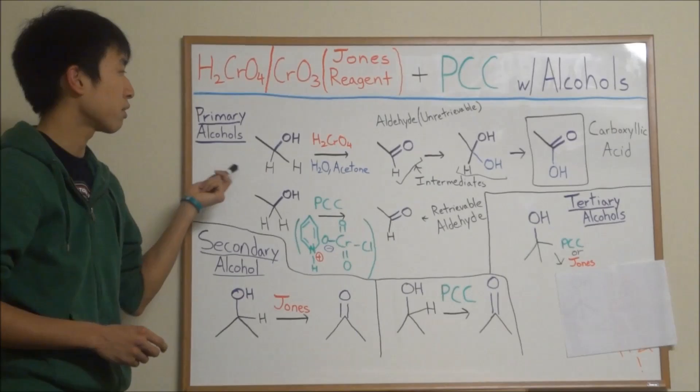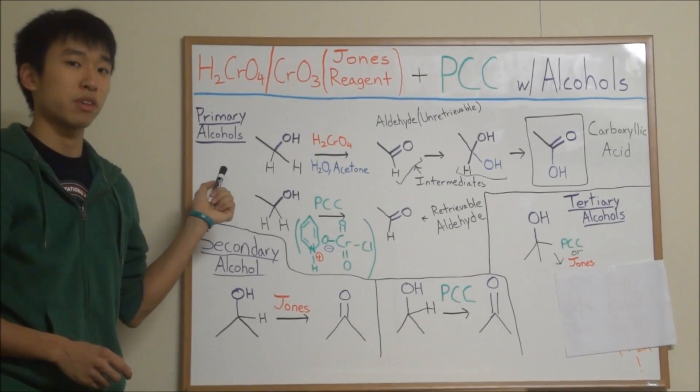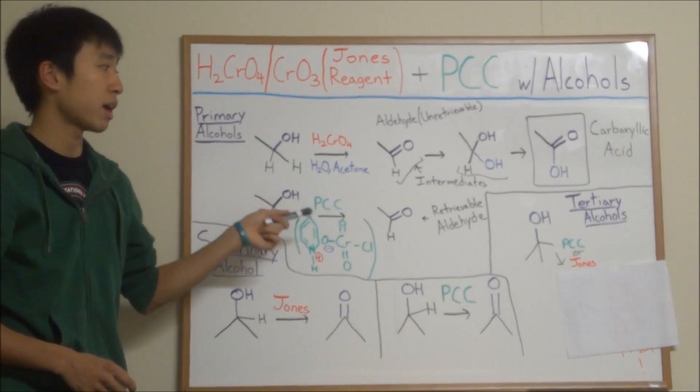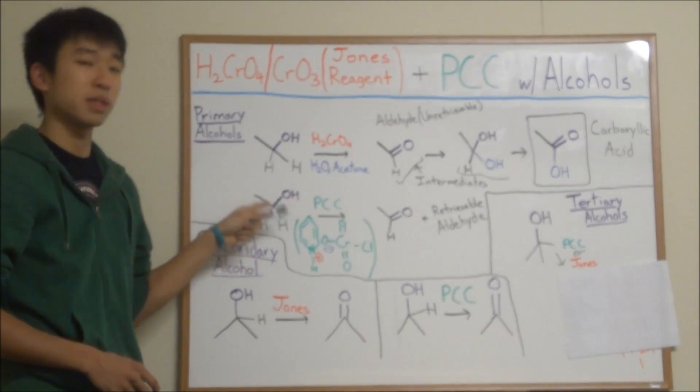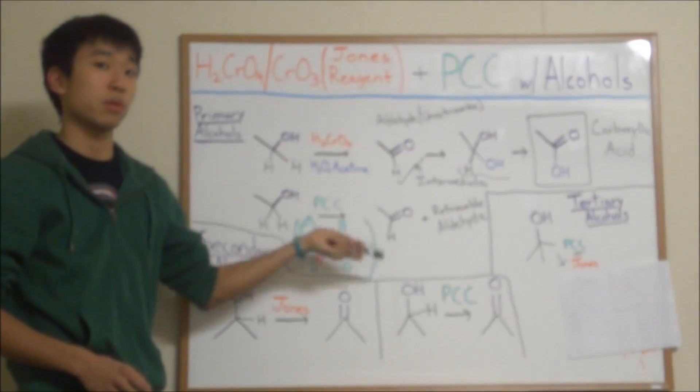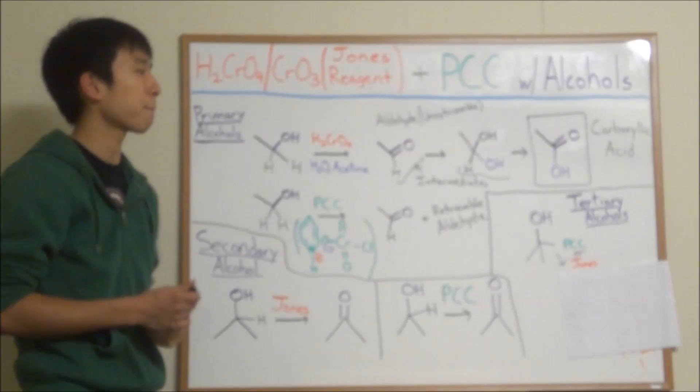On the test, let's say if you're given a primary alcohol and your professor wants you to get it to only aldehyde, make sure you use PCC and not Jones Reagent. This is like one of the most common mistakes that students tend to make.